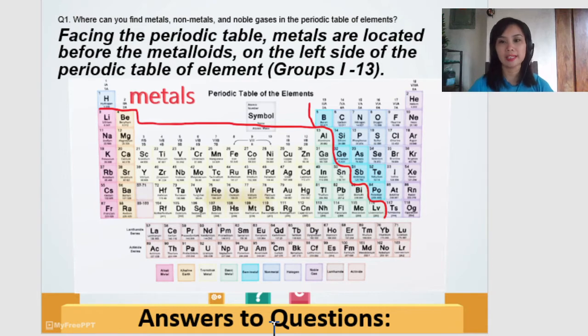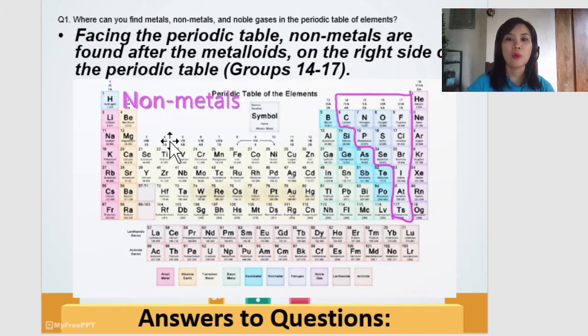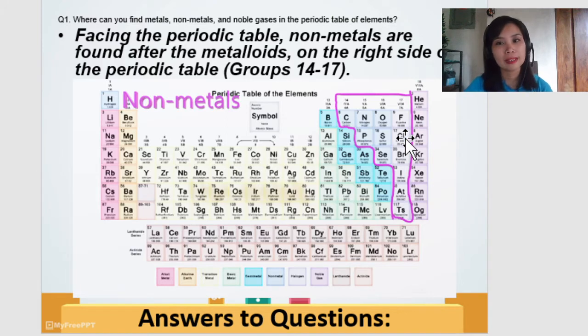Now, when you face the periodic table, or facing the periodic table, metals are located before the, very good, metalloids that is on the left side of our periodic table of elements. Hopefully, you can follow the red line indicated in our figures slide. Next, how about the non-metals? Again, facing the periodic table, non-metals are after the metalloids. And this is the metalloids from boron up to here. This is our metalloids. After that, those are already our non-metals on the right side of the periodic table. Of course, except for this last group. The helium, neon, and argon, they are also other groups.